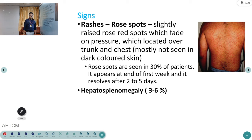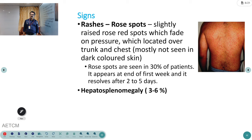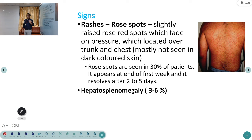Rashes in typhoid are not very common in our population because the dark skin color makes them difficult to observe. These spots are called rose spots — slightly raised spots which fade on pressure, located over the chest and trunk. They are only seen in 30% of patients, appear at the end of the first week, and resolve within 2 to 5 days.